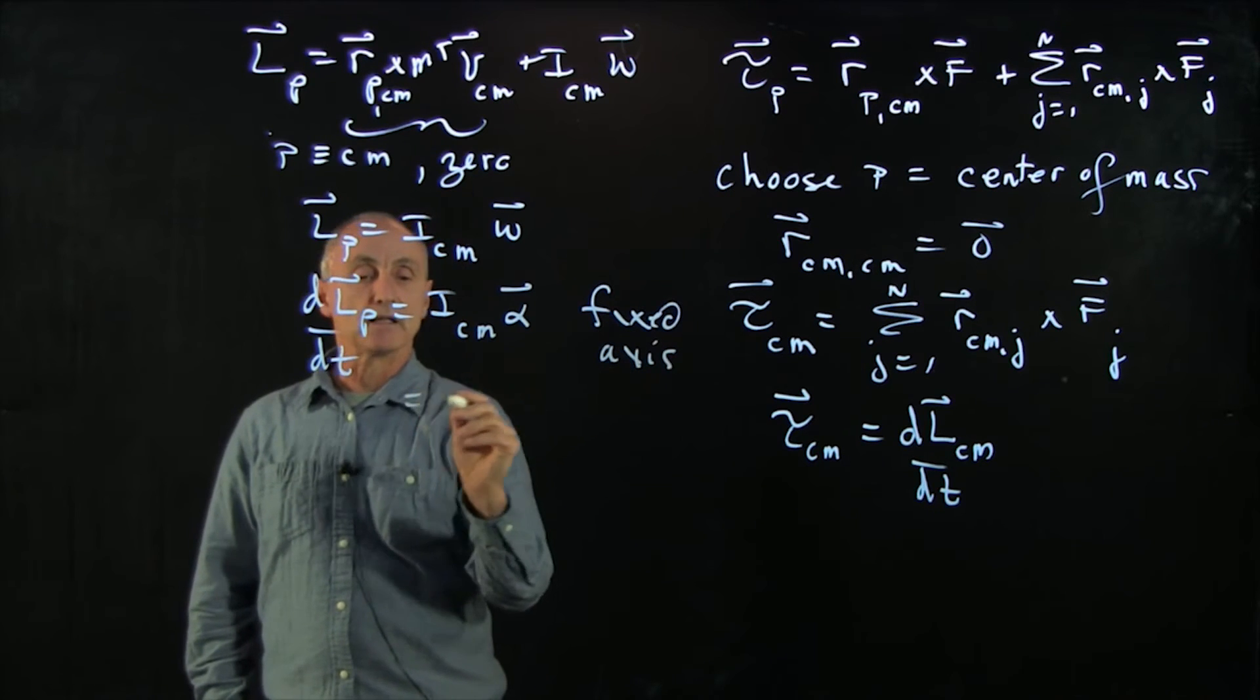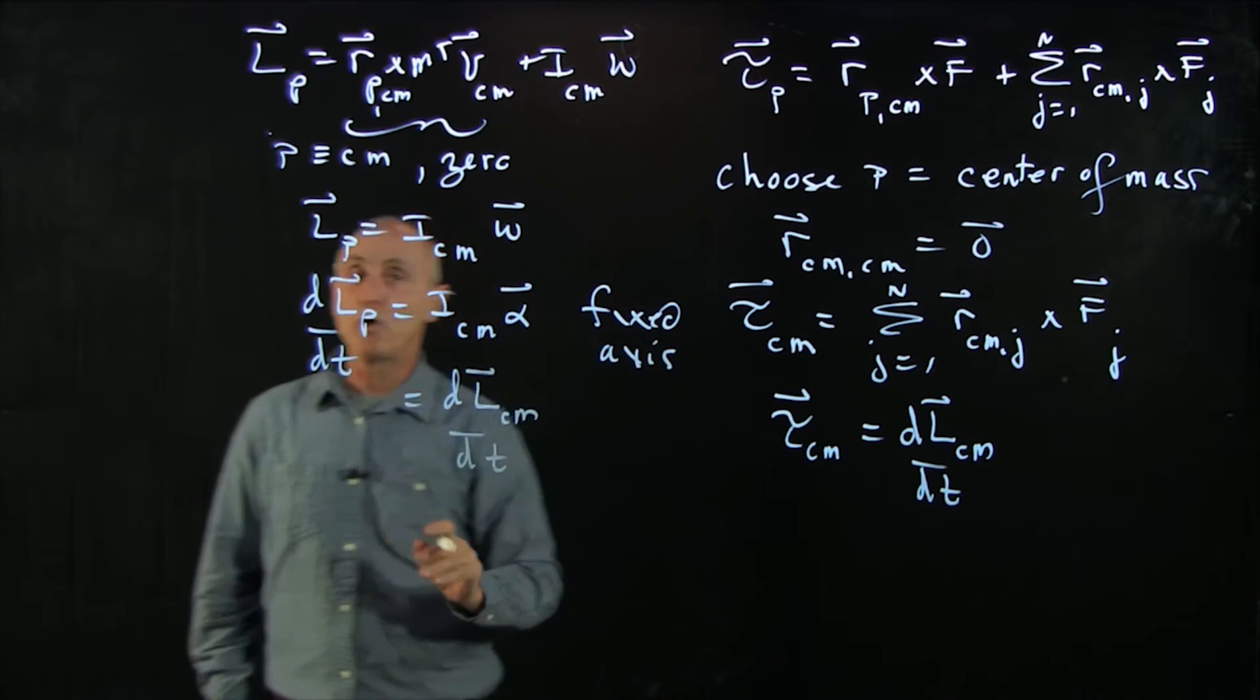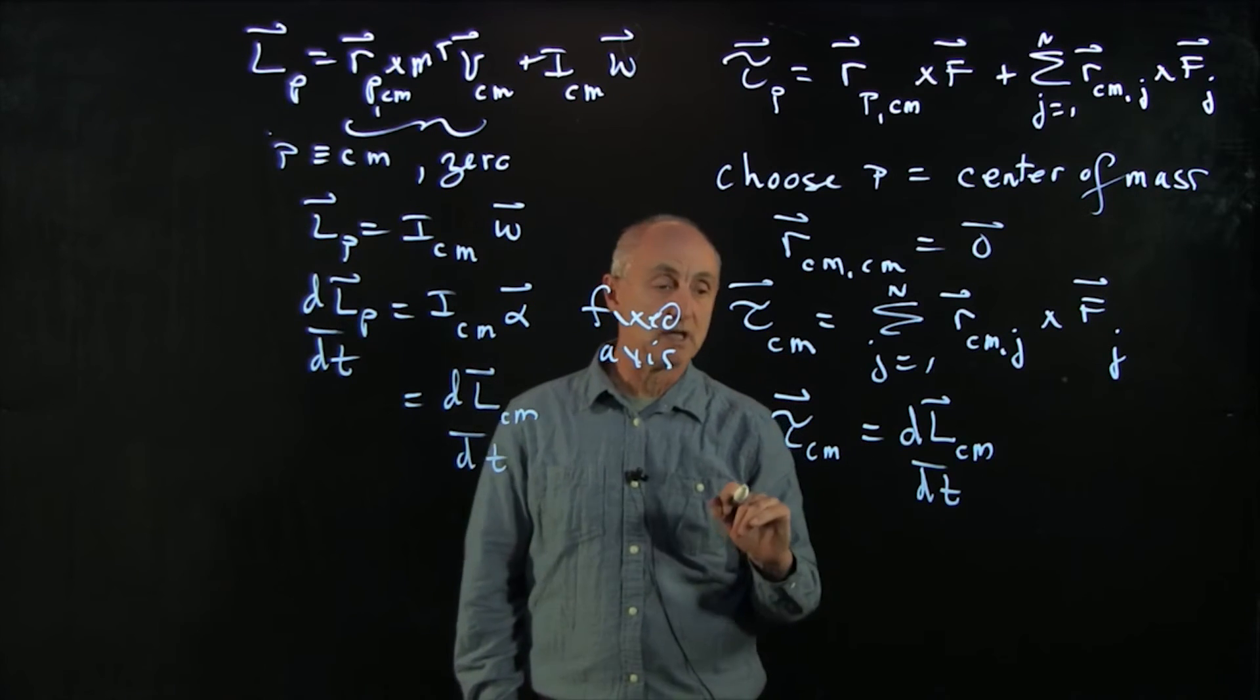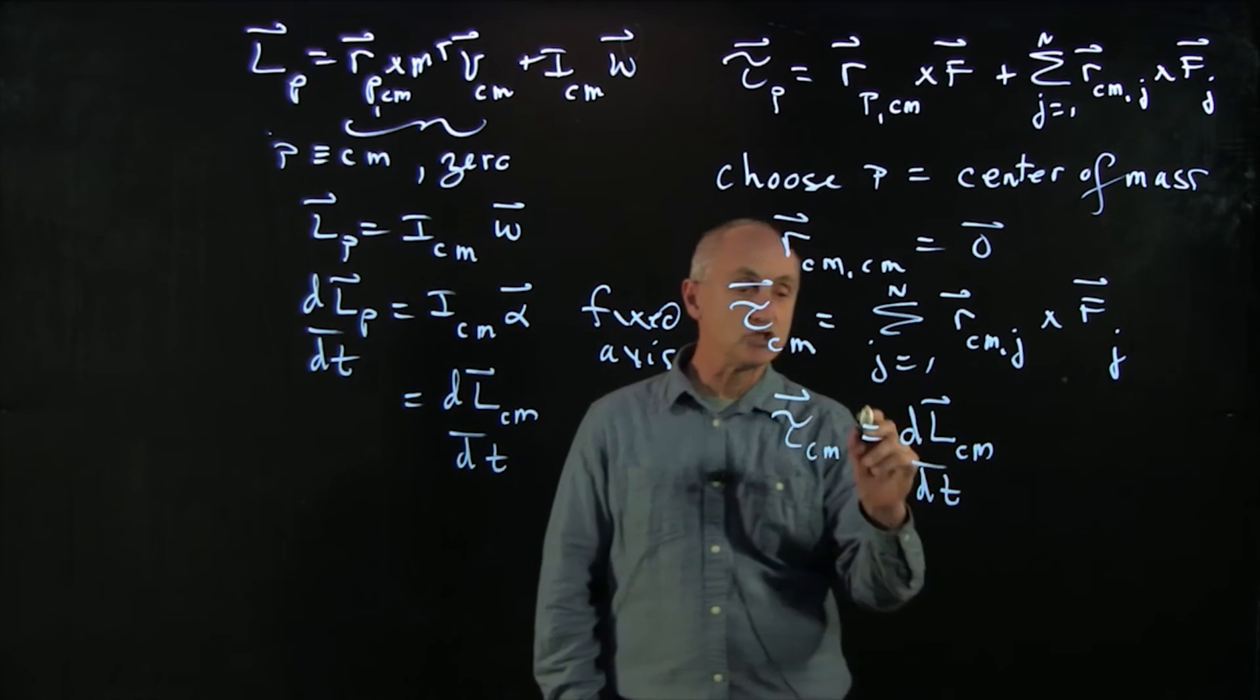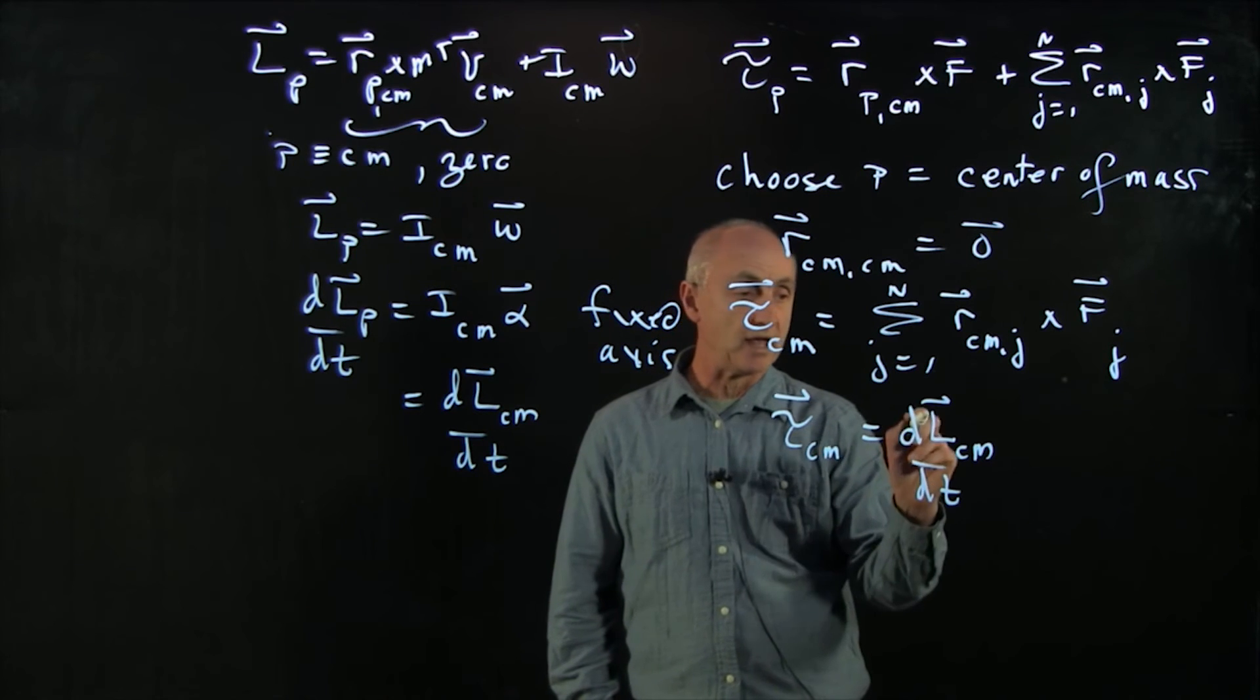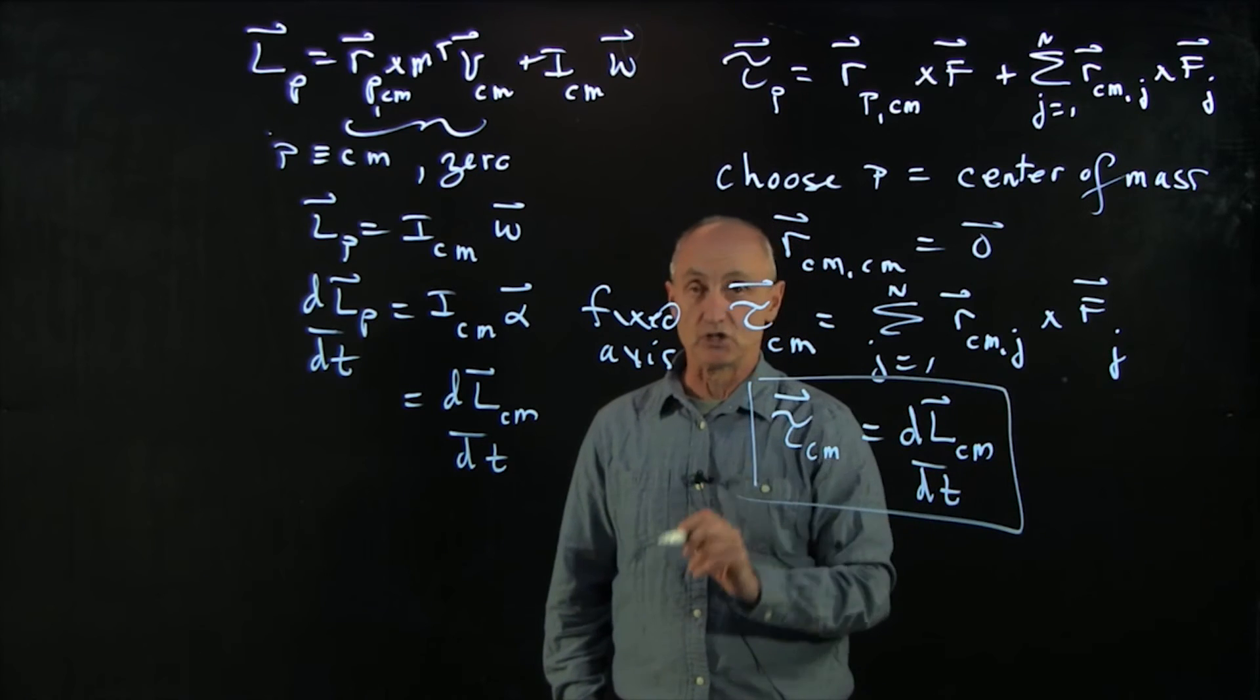And that's exactly equal to dL_CM/dt. And so the point here is that when we're applying problems involving rotation and translation, we can just analyze the torque about the center of mass and only consider how the angular momentum about the center of mass is changing.